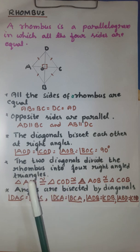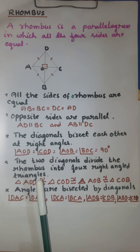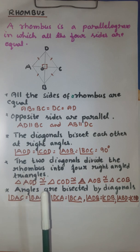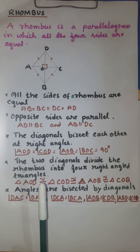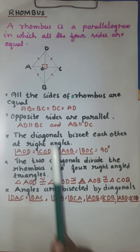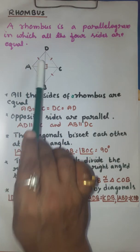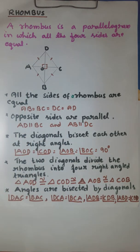So you have to focus on the important properties: all the sides are equal, and the diagonals bisect each other at right angles. Keep in mind these key properties of a rhombus.